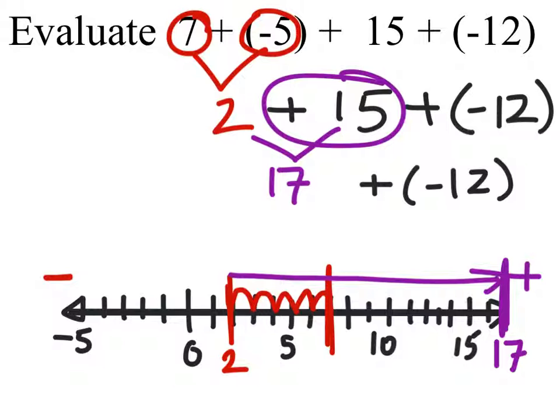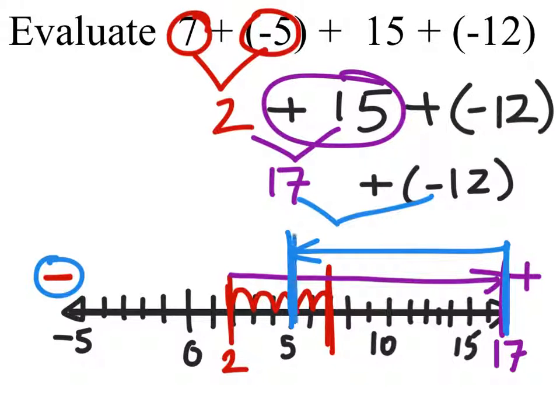Next, we're going to combine 17 and negative 12. We're going to go from 17 in the negative direction again, 12 times. So I'm going to count those. And you can see here that I would end now at 5. There's no other numbers to operate on when we evaluate this, so it simply equals 5.